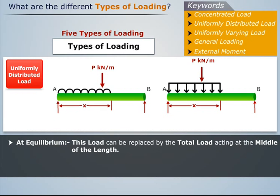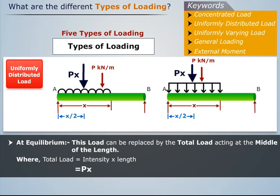If we need to consider the equilibrium of the entire beam, then this load can be replaced by the total load acting at the middle of the length. Where total load is equal to intensity times length, this load will act at a distance x by 2 from point A.